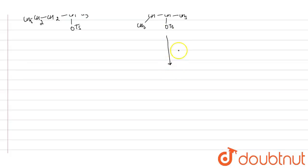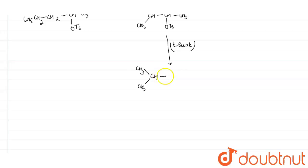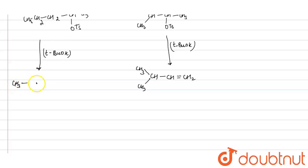Further, this tosylate is reacting with tertiary butoxide. In the presence of tertiary butoxide, an elimination reaction will take place and an alkene will form. For the straight chain, it forms CH3-CH=CH2 type alkene: CH3-CH2-CH2-CH=CH2. For the branched chain, reaction with tertiary butoxide also forms an alkene: (CH3)2C=CH-CH3 type structure.